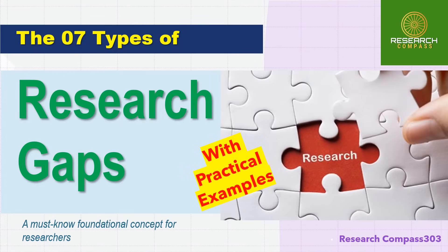Research gaps are the areas of knowledge that have not been extensively explored or remain unaddressed within a particular field or topic. Recognizing and addressing these gaps is crucial for advancing knowledge and ensuring the significance and originality of a PhD dissertation. Today I will discuss the seven types of research gaps along with practical examples, definitions, and relevant references to help researchers understand this important fundamental concept.